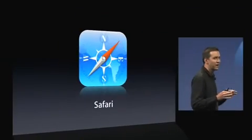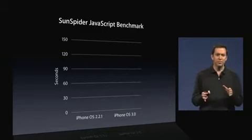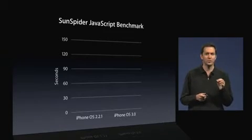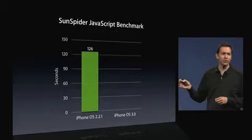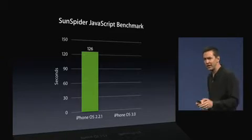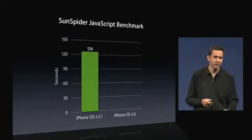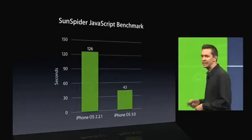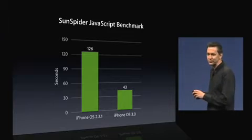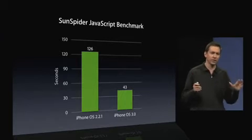Next: Safari. We've got some great improvements to Safari, starting with performance. Sunspider is a standard JavaScript performance benchmark. On iPhone OS 2.2.1 on an iPhone 3G, we run this in 126 seconds — that is really fast; it's impressive just to complete this benchmark on a phone at all, as most phones cannot run the benchmark. Well, in iPhone OS 3.0, we run JavaScript almost three times faster. Your web pages load and render really fast.